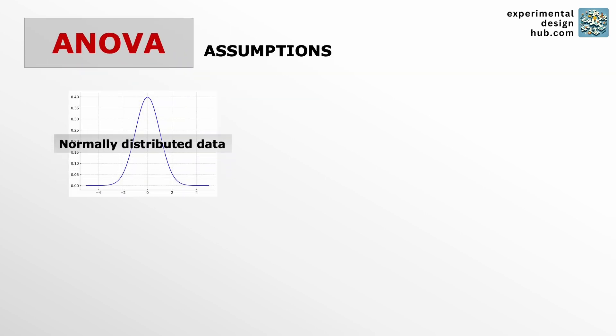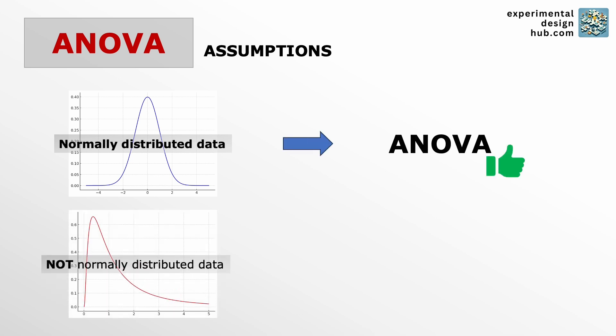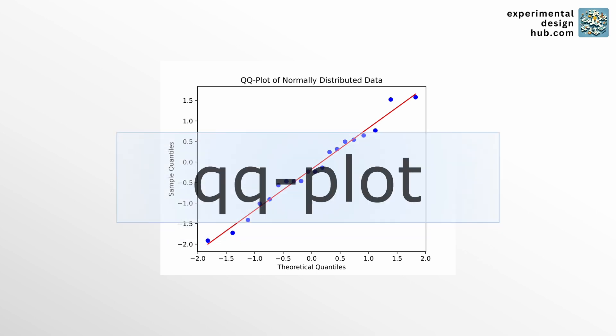ANOVA assumes that the data is normally distributed. That means that technically you're only allowed to perform ANOVA when the data actually is normally distributed. The problem is we can only find out after the analysis by looking at a QQ plot.